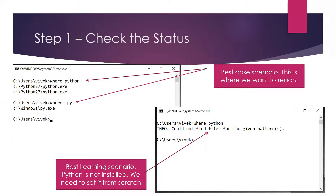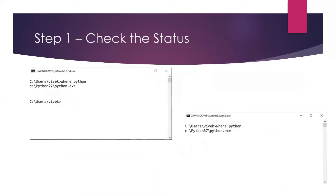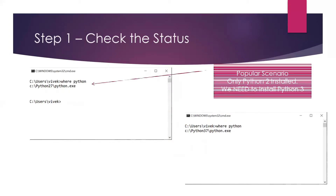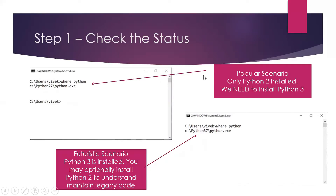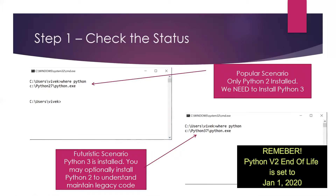Apart from those two scenarios, there are other use cases: only Python 2 is available, or only Python 3 is available, and we will be looking into those scenarios as we proceed. If only Python 2 is installed then we need to install Python 3. If only Python 3 is installed, you may not need Python 2 unless you have to migrate some old legacy code. But as Python 2 is reaching its end of life in January 2020, installing Python 2 will be optional.